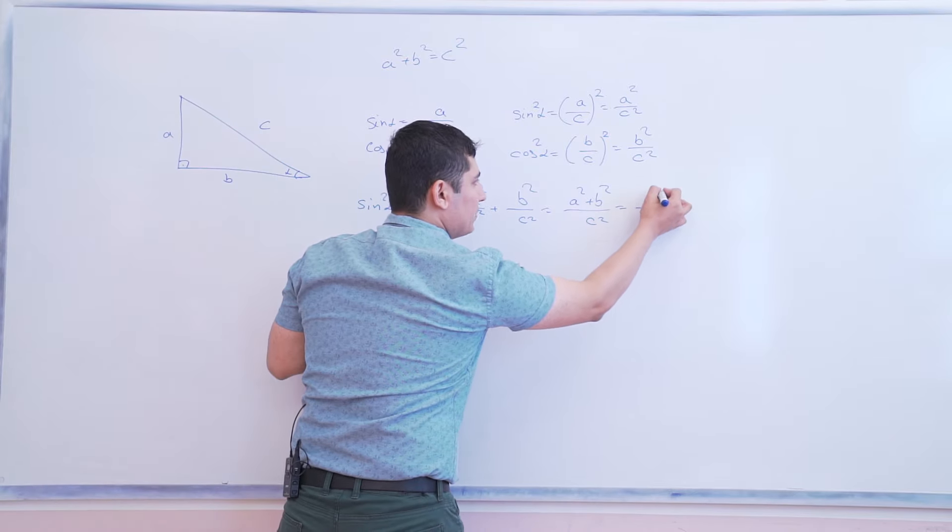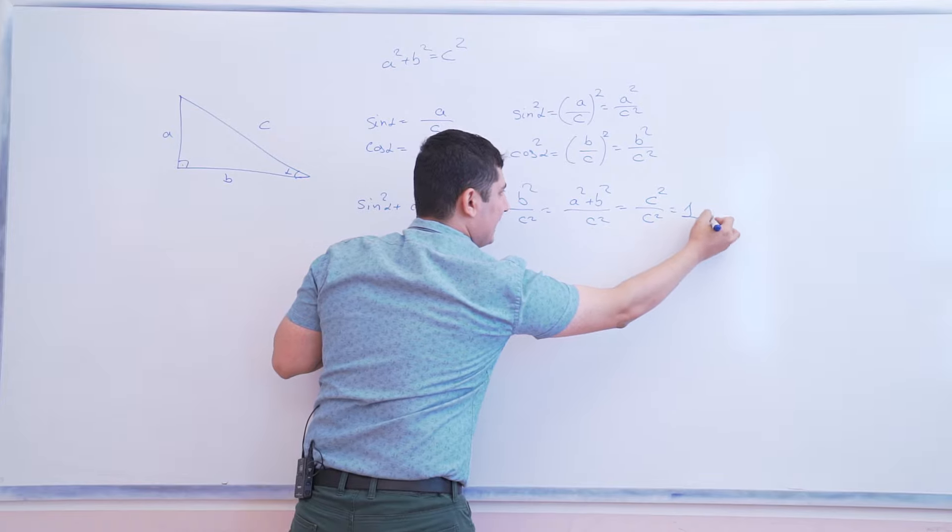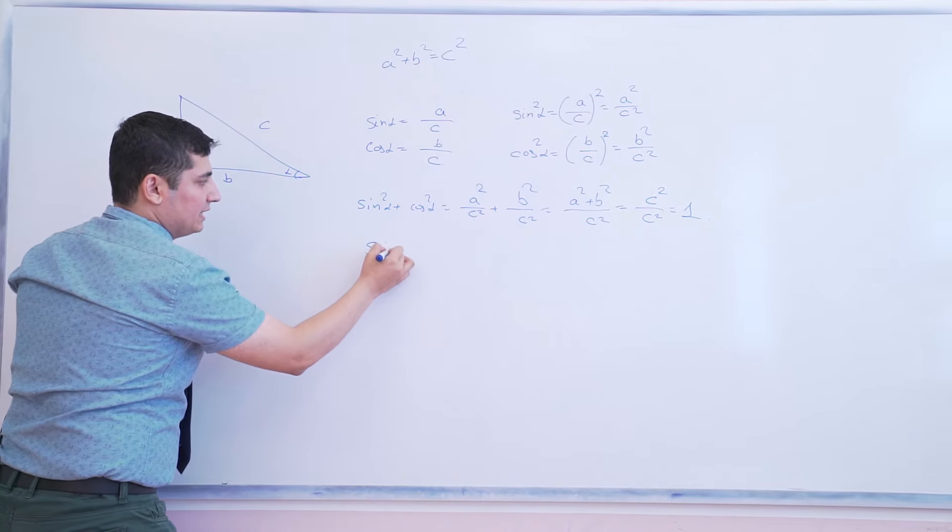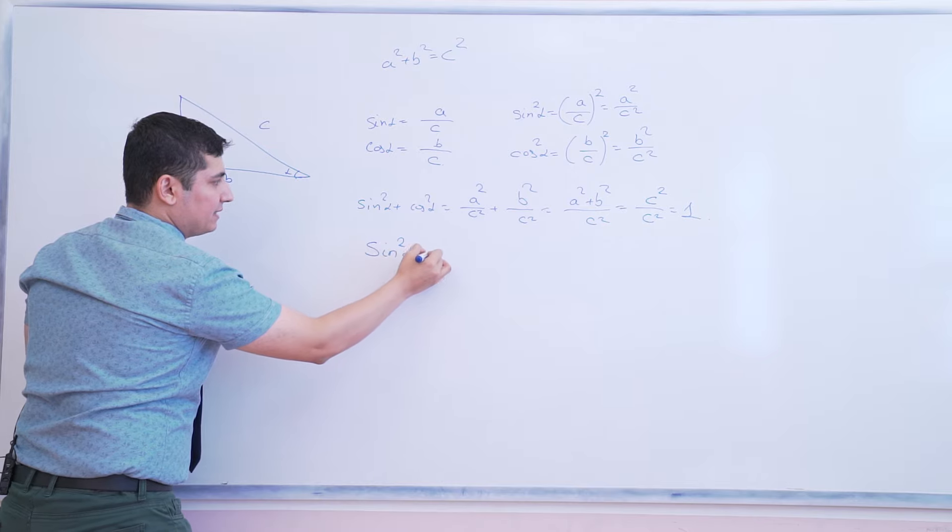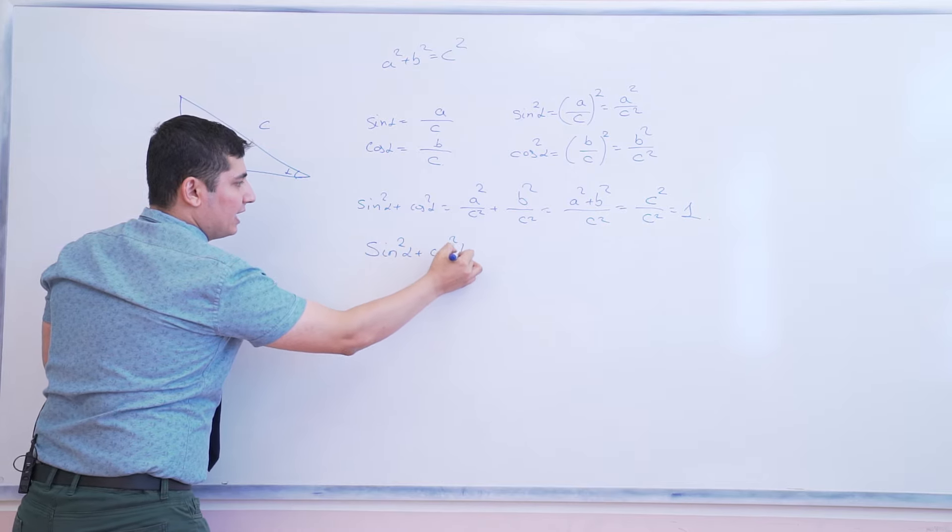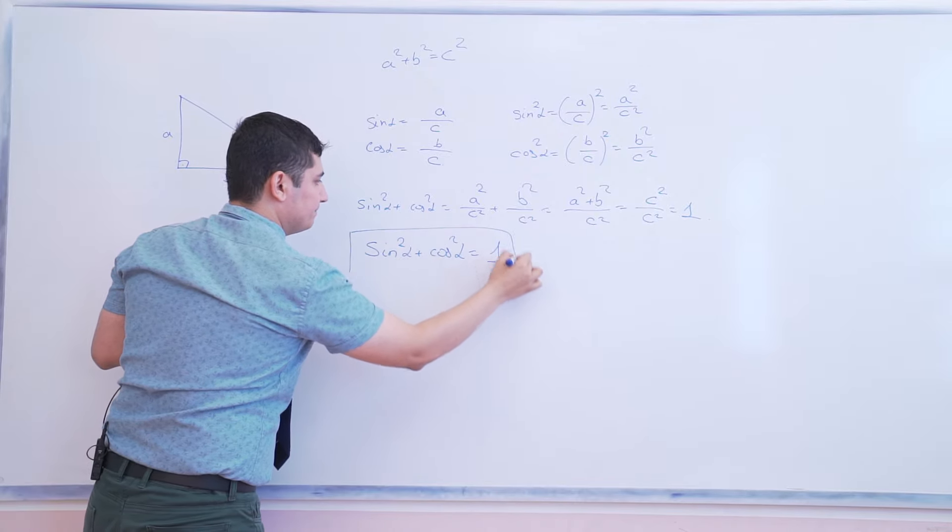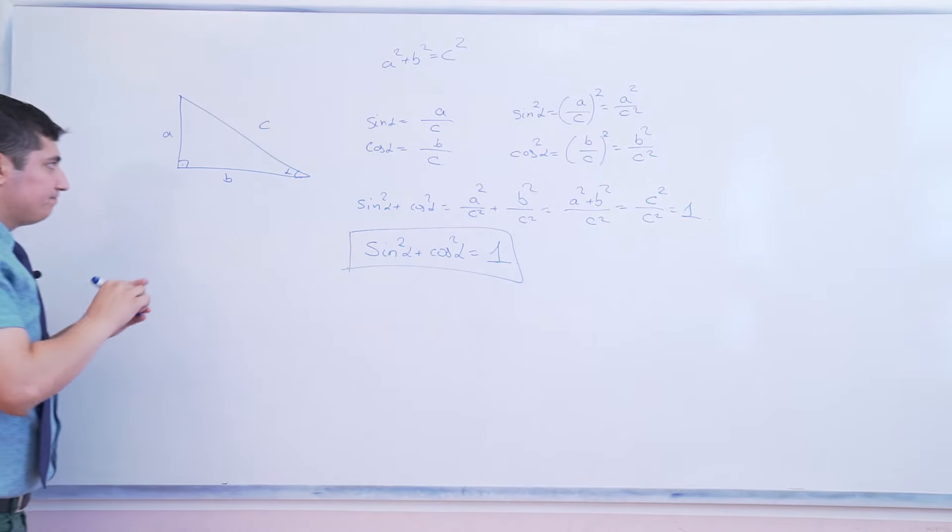So, C squared divided by C squared. It's clearly 1. So, the main theorem of trigonometry is sine squared alpha plus cosine squared alpha is 1. Yes. Now, guys.